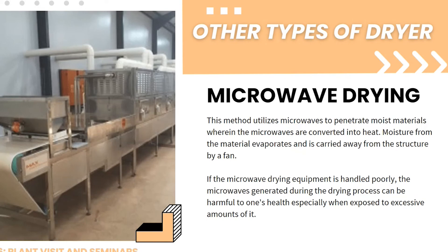There are more types of drying methods. Microwave drying works in the same way as heating food in a microwave oven — it utilizes microwaves to penetrate moist materials, where the microwaves are converted into heat and moisture evaporates, carried away by a fan. If microwave drying equipment is handled poorly, the microwaves generated can be harmful to health, especially with excessive exposure. Tissues harmed are often below the skin where there are no sensory cells to react to excessive heat. The most well-known health detriment from microwaves is cataracts.